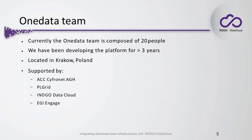Briefly about the OneData team: we are currently composed of about 20 people, grouped into developers, documentation and support team, and testing team. The platform has been developed for more than three years, during which we released versions 1.0 and 2.0, both deployed to Cyfronet and PelGrid resources. We are located in Krakow, Poland. Our project is currently supported by Cyfronet, PelGrid, Indigo Data Cloud, and EGI Engage, under which we develop many features.